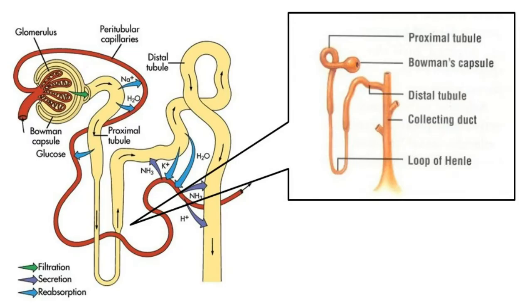This filtered liquid goes into the next part of the nephron — the renal tubule. Wait — we need water, glucose, and some salts; those are necessary. About only 1% of the glomerular filtrate actually leaves our body. The rest of the water, salt, glucose, etc. are reabsorbed in the renal tubule. Most of the water, glucose, ions, etc. are reabsorbed in the first part of the renal tubule, which is the proximal convoluted tubule.